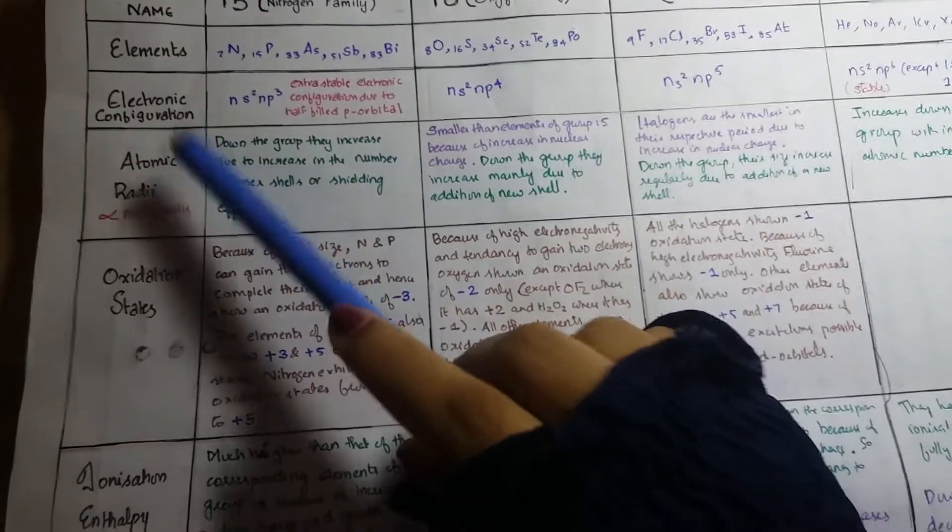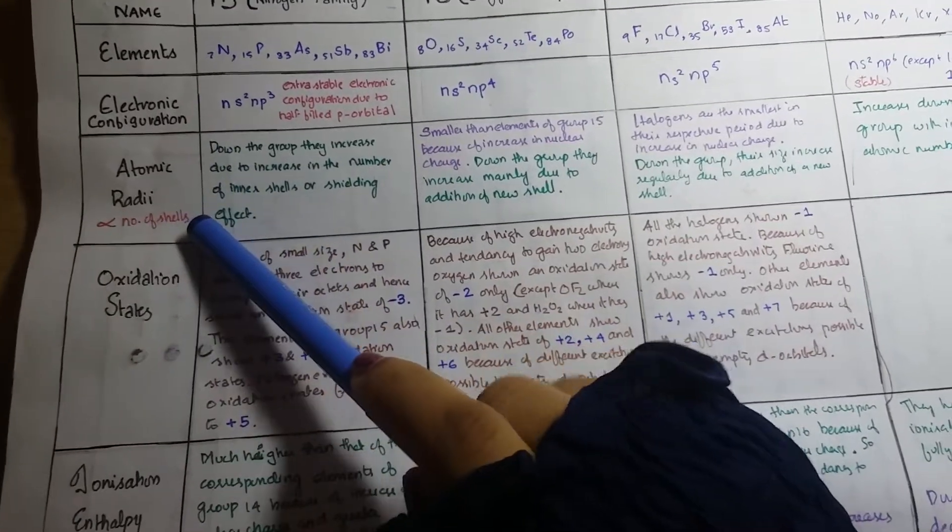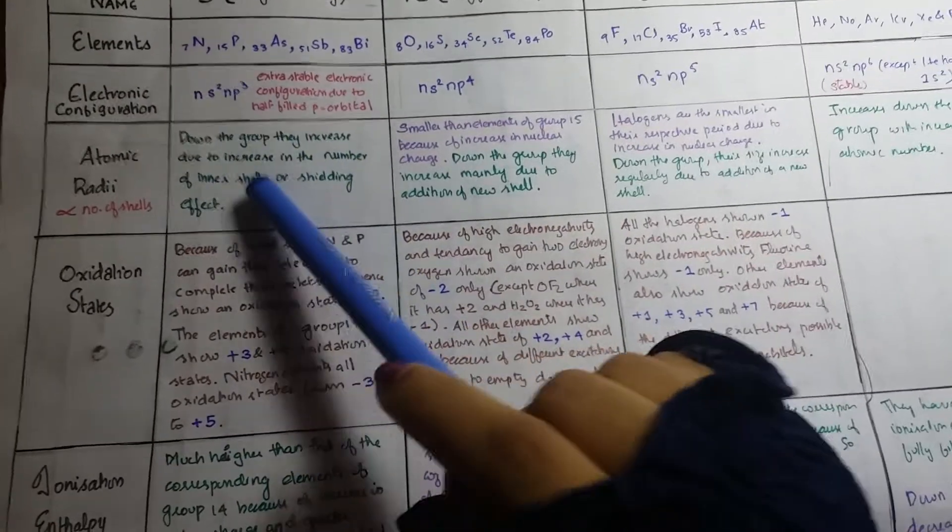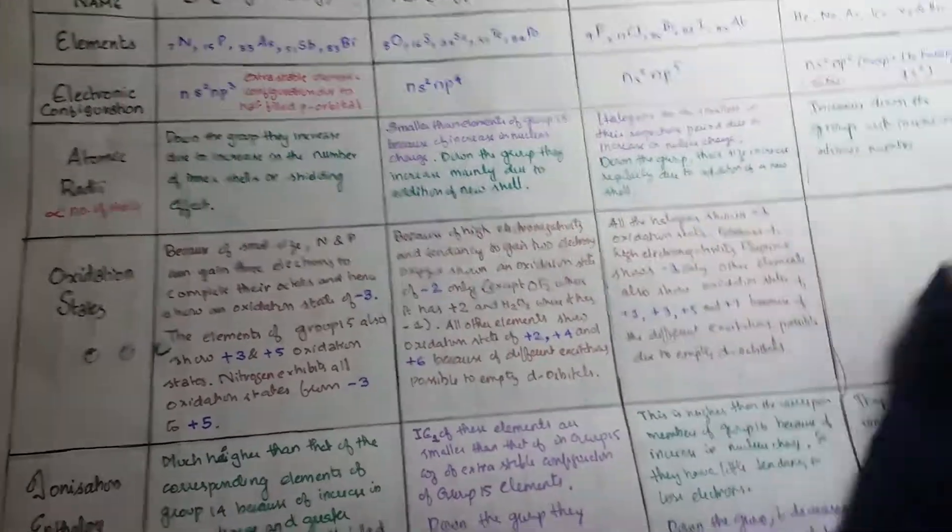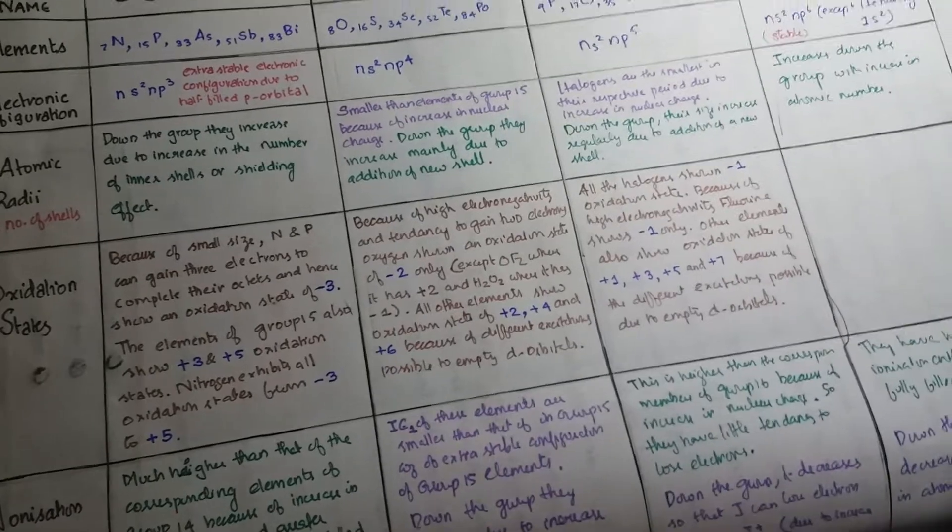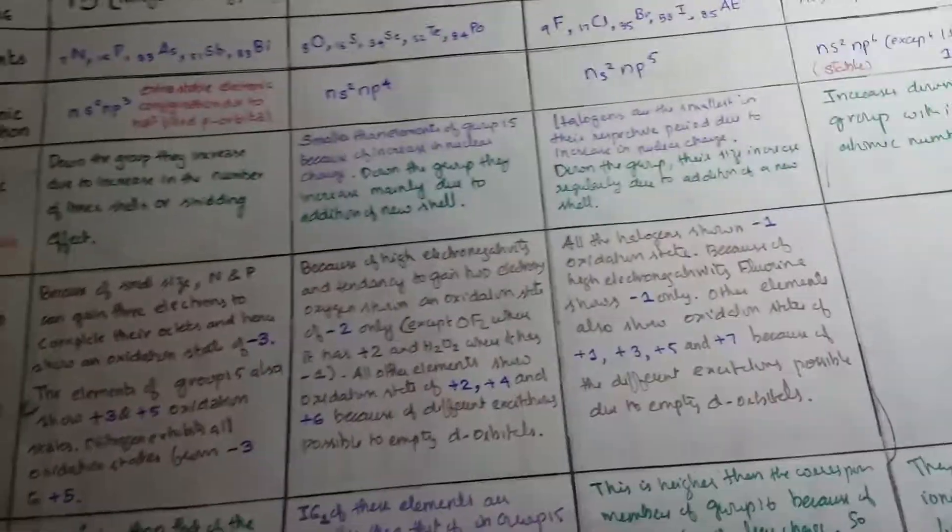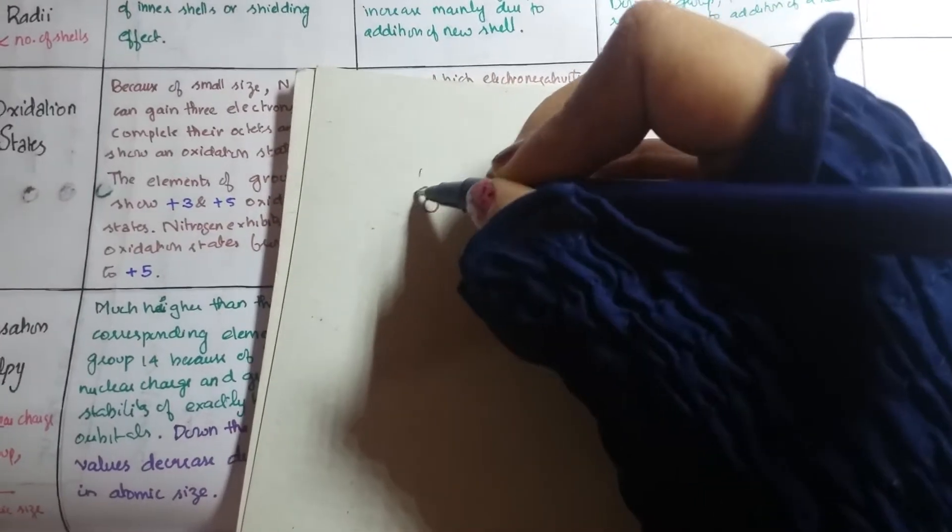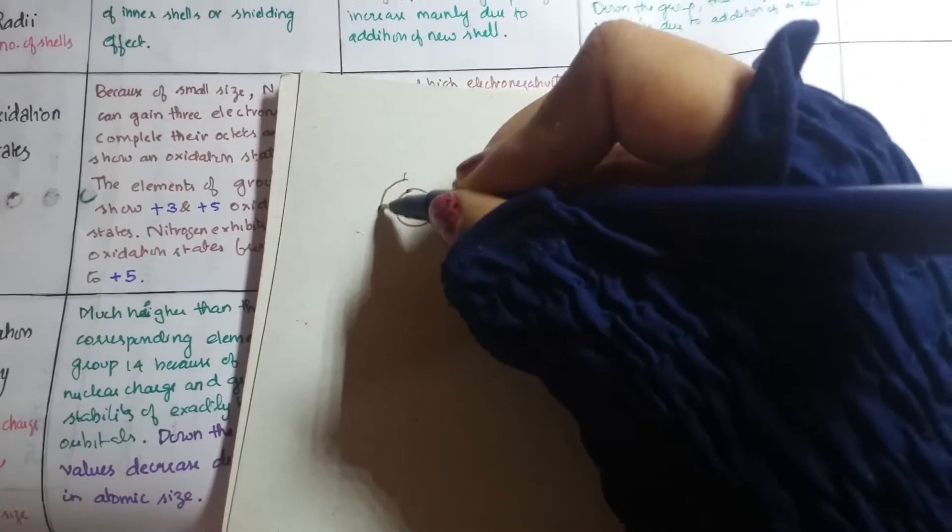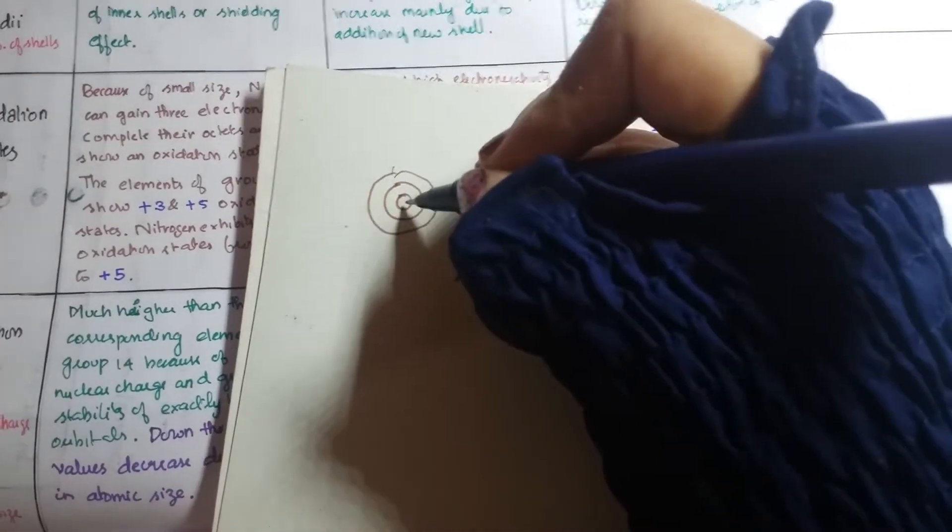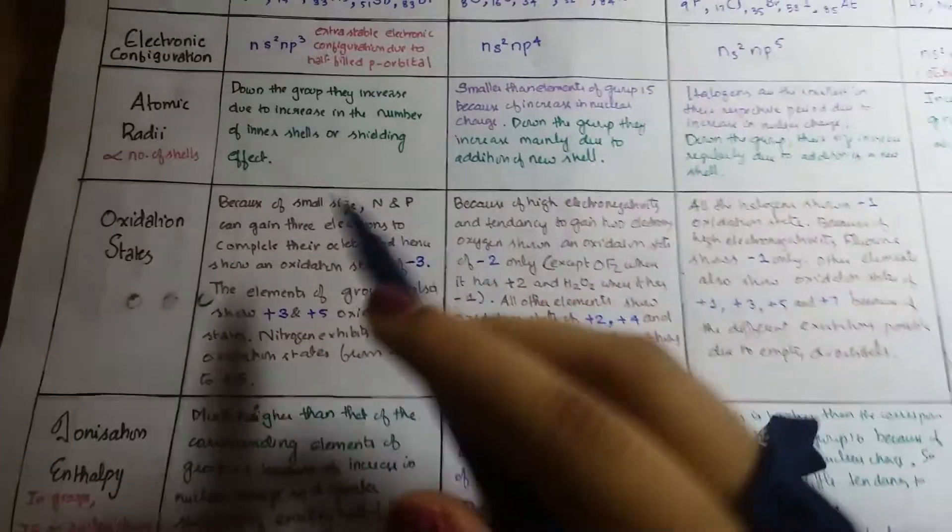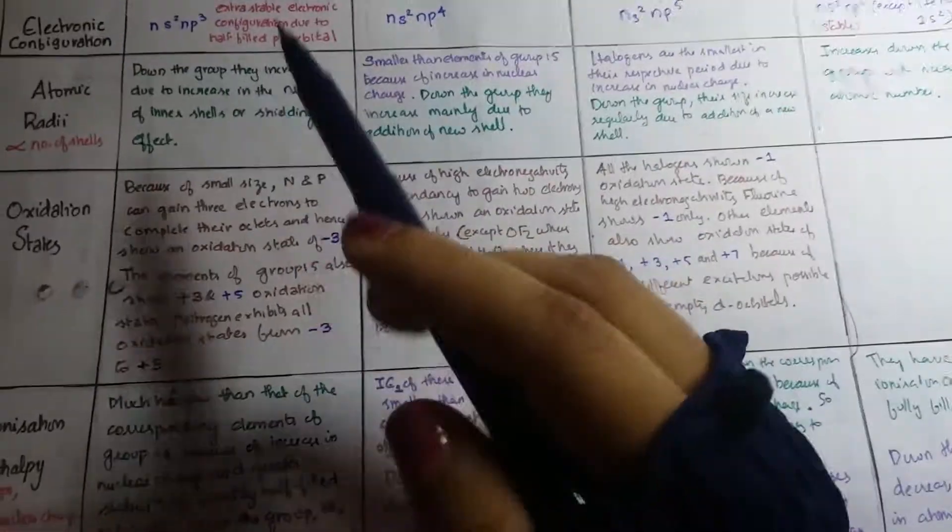Then atomic radii. Atomic radii is directly proportional to number of shells - that is, if the number of shells increases then the atomic radii will also increase. We know that. I will show you - for example, if this is the number of shells, as the number of shells increases, the radii is also increasing, right? Just like that. So atomic radii is directly proportional to number of shells.